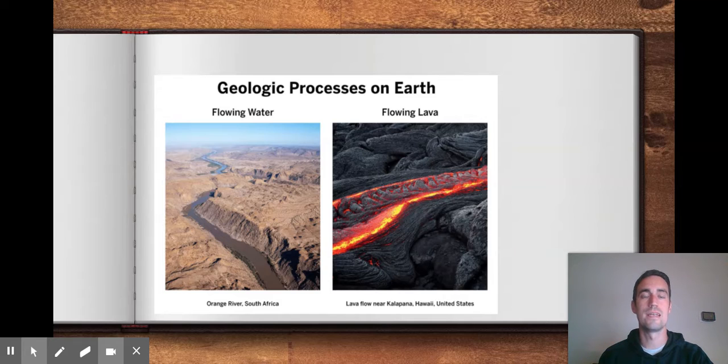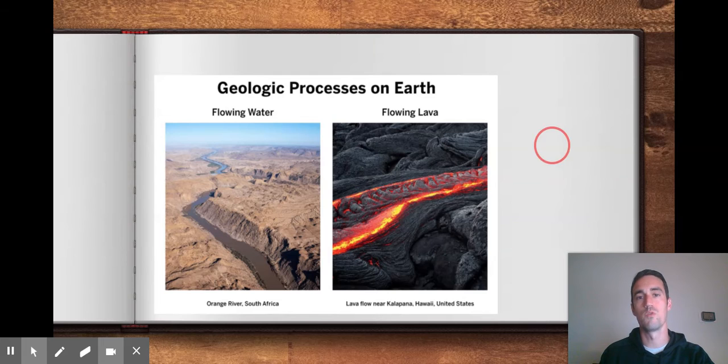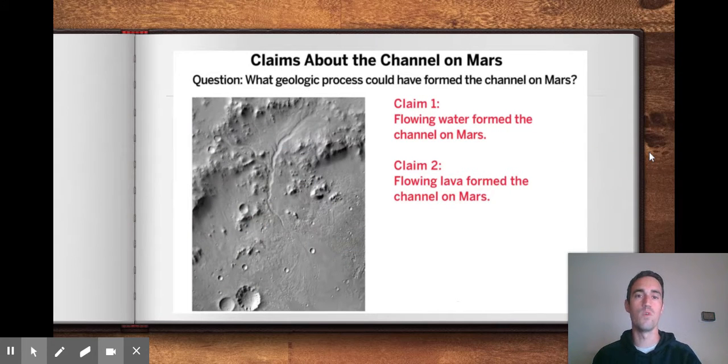So your exit ticket today is to try and use the evidence that you see to support one of the two possible claims. Claim one for this question of what geological process could have formed the channel on Mars is that flowing water formed the channel on Mars. Claim two is that flowing lava formed the channel on Mars. What I want you to do below is actually support one of these claims with evidence. Now it doesn't really matter right now if you are correct or not. What we're trying to do is actually use some evidence to build an argument that supports the claim that you think is true.